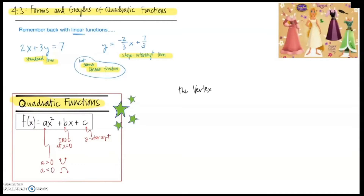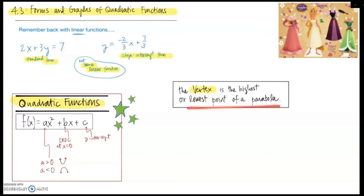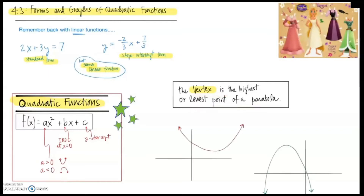One thing we need to talk about with a quadratic function is what the vertex is. The vertex is a really important point — it's where the parabola turns around. It's either the lowest point or the highest point of the parabola. For example, one parabola might have a lowest point at (4, 2), and another might have a highest point at (−3, 5). Every parabola will have one vertex.